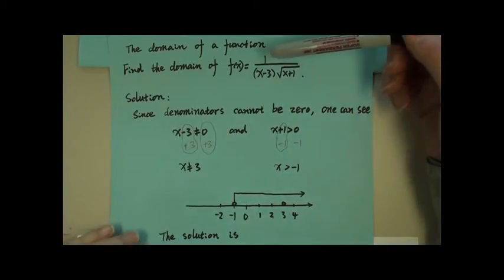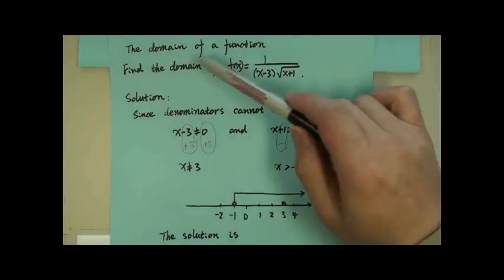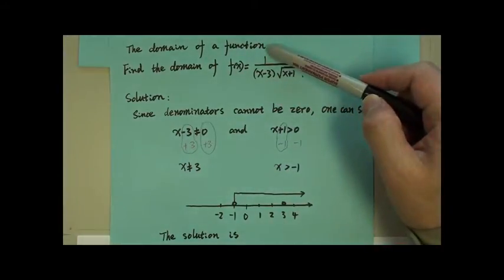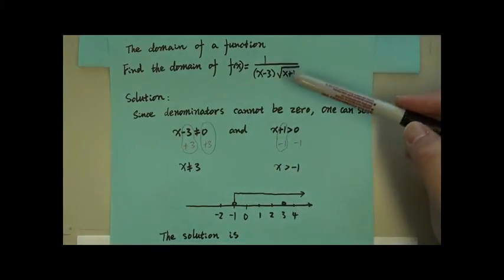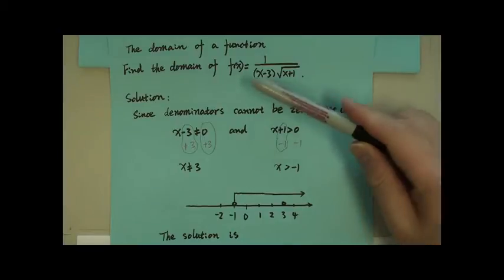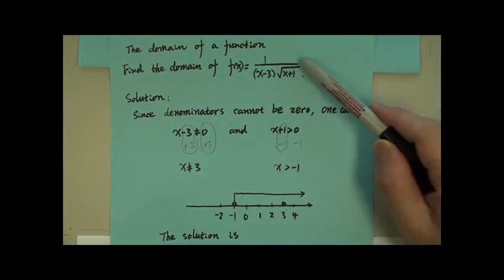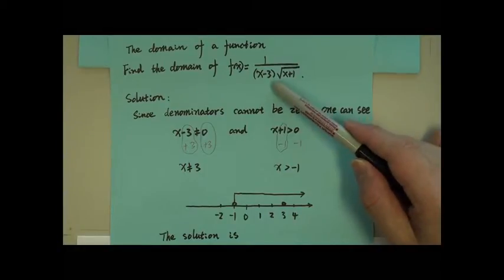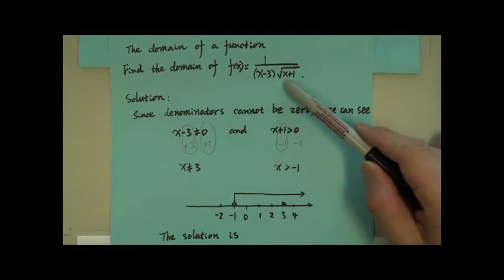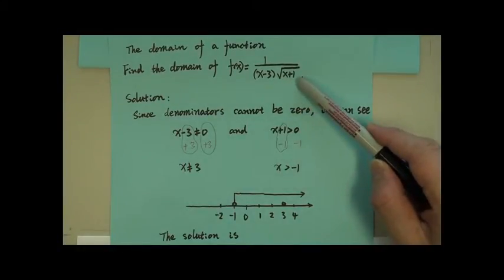Let's look at how to find out the domain of a function. The example here is that the function f is given 1 over x minus 3 times radical x plus 1.